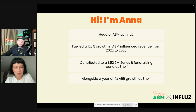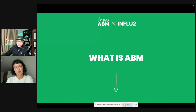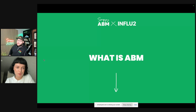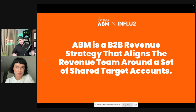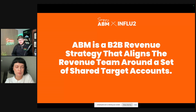I'm incredibly excited to dig into some of the practical examples. But first, I always like to level set, because when you Google ABM or ask 100 marketers what ABM is, you're probably going to get 100 different definitions. ABM, for the purposes of our conversation today, is a B2B revenue strategy that aligns the revenue team around a set of shared target accounts. When I use the word revenue team, that's marketing, sales, and CS — it's a very cross-functional program.